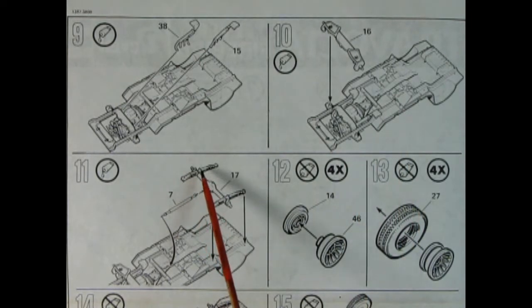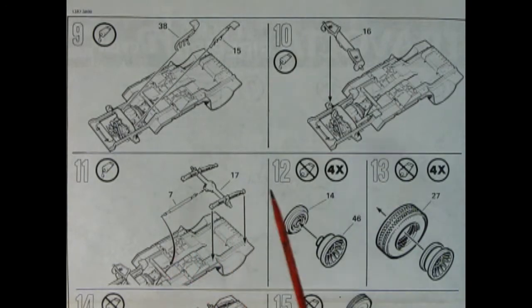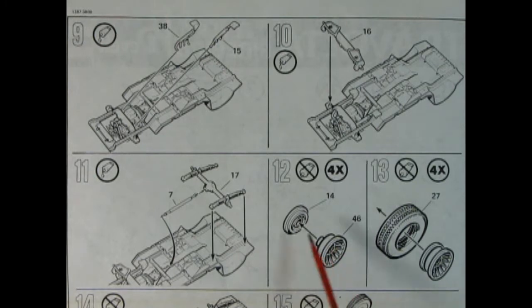Our differential includes the leaf springs and the driveshaft which match to the end of the transmission. And then our wheels are very straightforward. You get the outer and inner and then you squish them into the tires and you do this assembly four times.